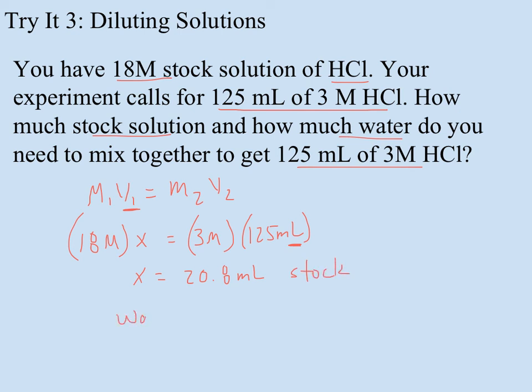So how much water do I use? Well, that would be the 125 milliliters of total solution I want minus the 20.8, or you can round this to 21, just two sig figs. That means 104 milliliters should be water, because my 104 and my 21 will give me a total of 125 milliliters.